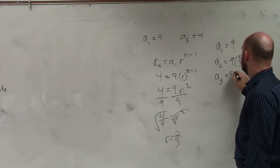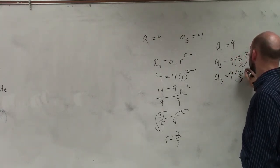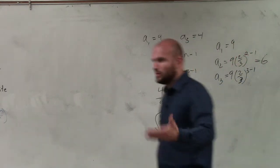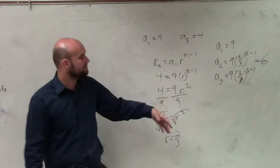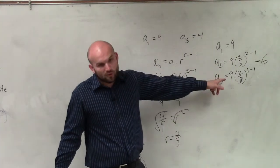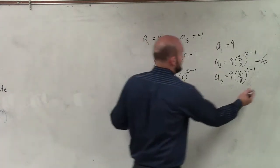Let's do a sub 3. 9 times 2 thirds raised to 3 minus 1. Does everybody see how I just plug in for n? 3 minus 1 is 2. 2 thirds squared is 4 ninths. 4 ninths times 9 equals 4.